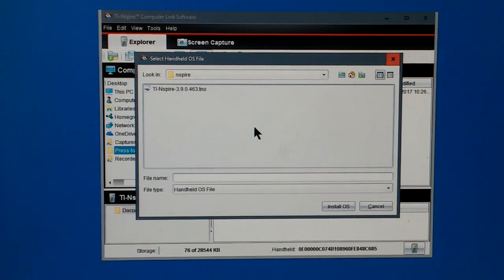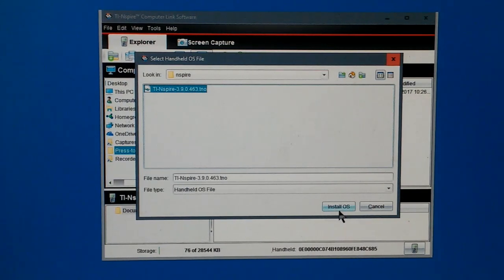I've gone ahead and navigated to the directory where that file is located, and I'm just going to install the OS. You can see this is the file name. It ends with TNO. The suffix is TNO, and this is version 3.9.0.463, the latest as of this video.